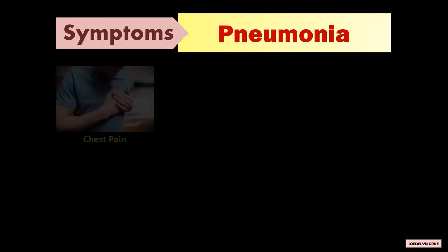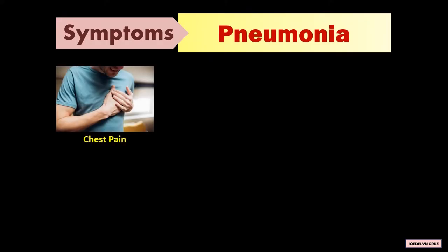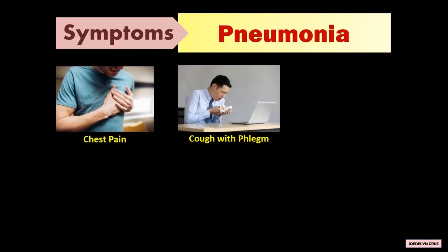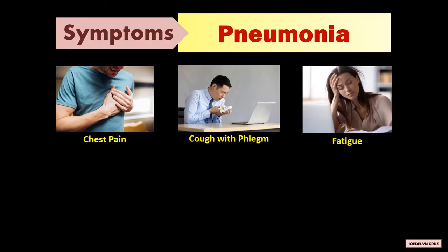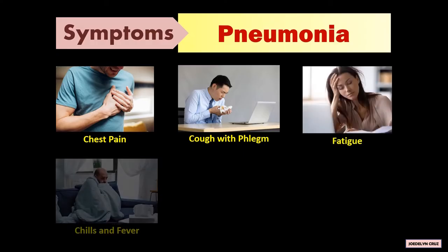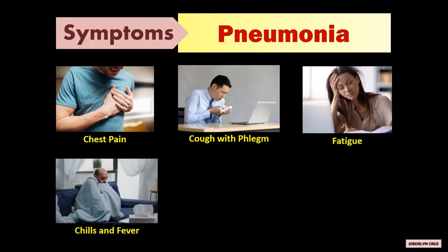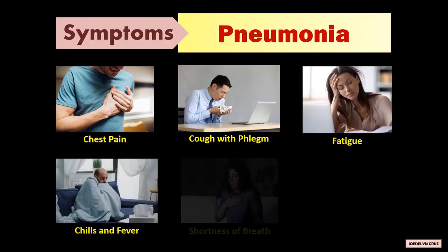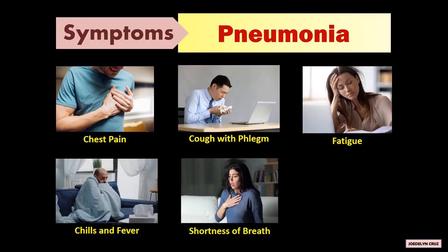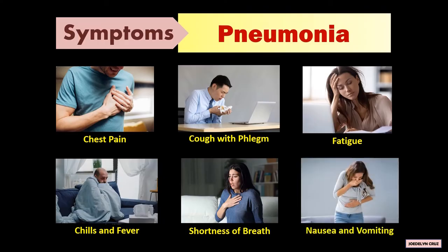The symptoms of pneumonia are chest pain, cough with phlegm, fatigue, chills and fever, shortness of breath, nausea and vomiting.